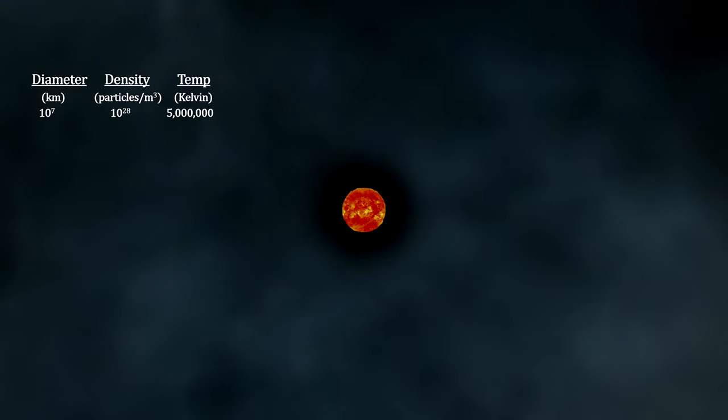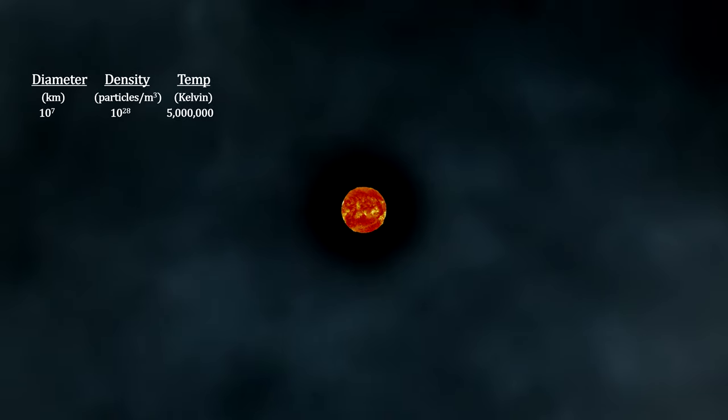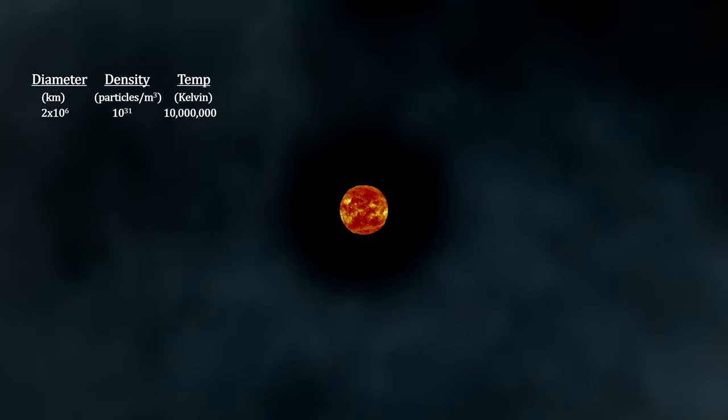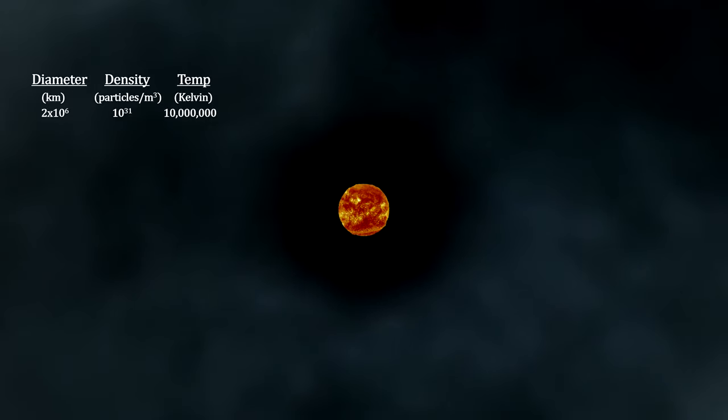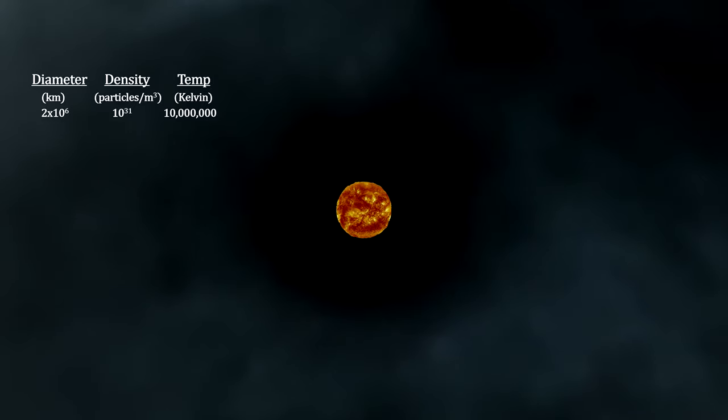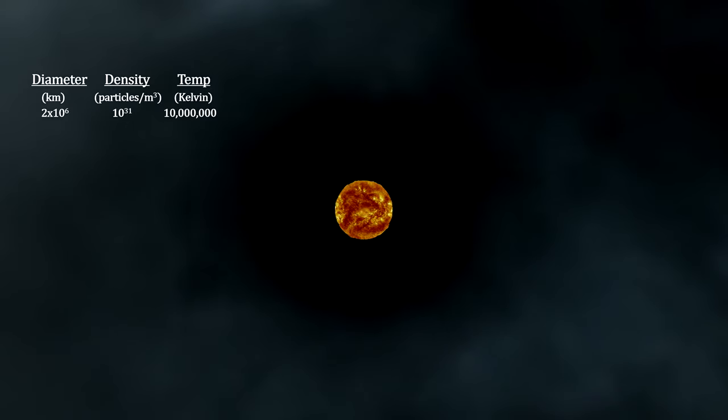Stars can remain in the T-Tauri phase for as long as 100 million years and reach 10 million Kelvin at their cores. As their solar winds pick up, they disperse the remaining gas and dust around them back into the interstellar medium.